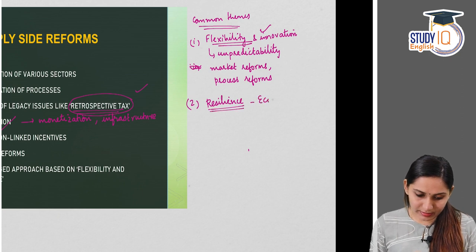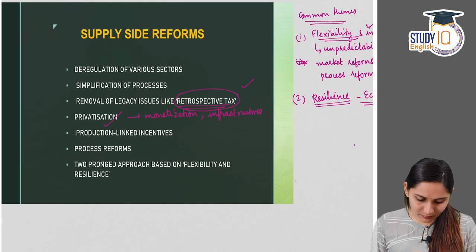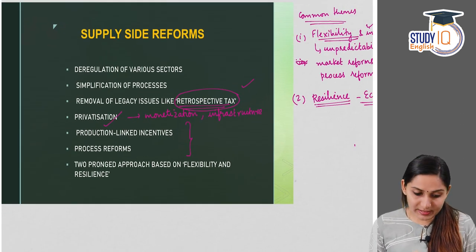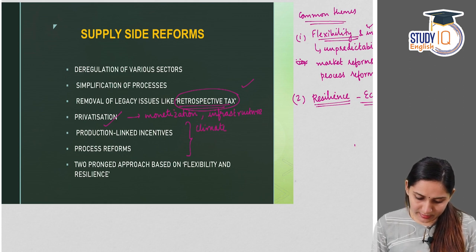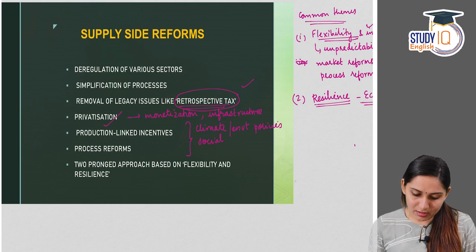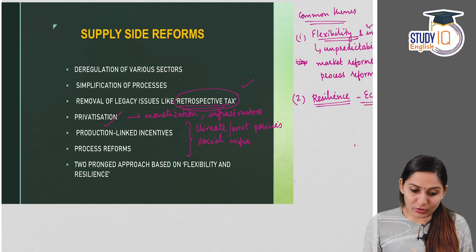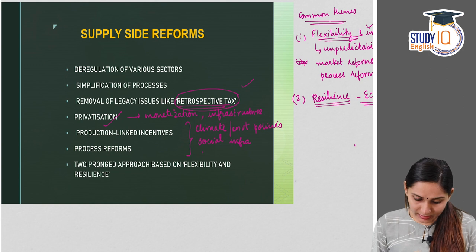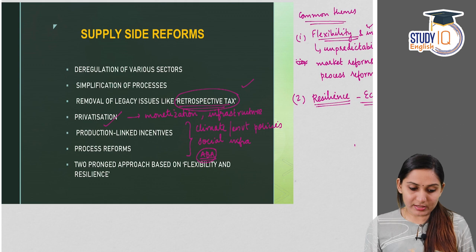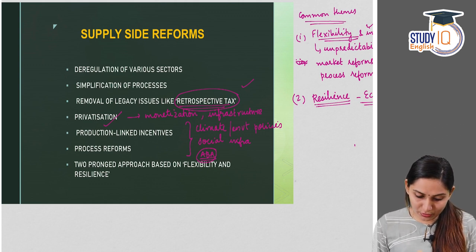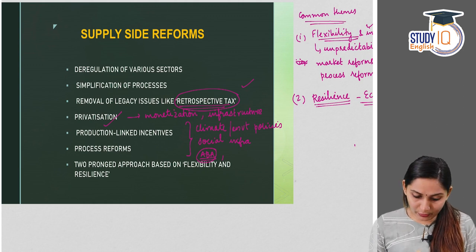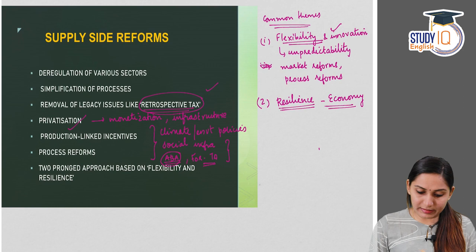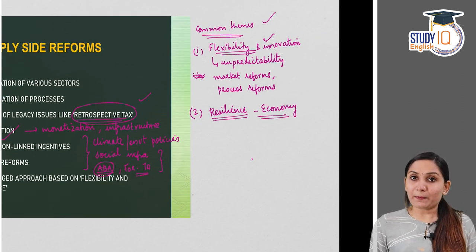The second theme of India's supply side strategy is building resilience or improving the resilience of the Indian economy. Under resilience building the major factors include: climate and environment related policies, social infrastructure — which is very important — such as drinking water, toilets, sanitation, insurance, basic housing, etc. Also support for key industries under the Atmanirbhar Bharat Abhiyan, and a strong emphasis on reciprocity in foreign trade agreements.